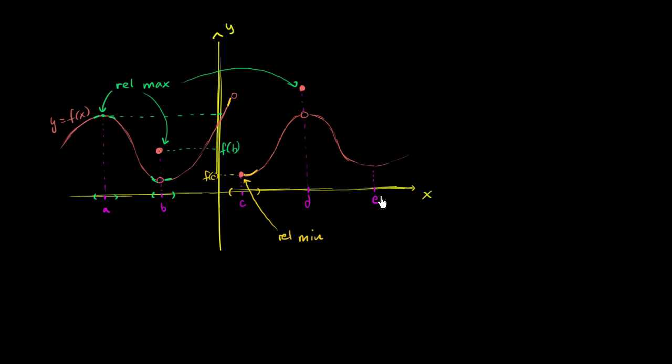And then e, when x is equal to e, this is the function hitting what could really be considered a classic relative minimum point. We can easily construct an interval where you take any x in that interval, f of x is going to be greater than or equal to f of e. So this is a relative minimum value as well.